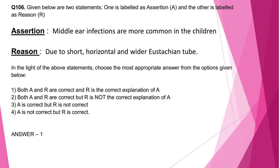Question number 106: Assertion — middle ear infections are more common in children. Reason — due to short, horizontal, and wider Eustachian tube. Both assertion and reason are correct and reason is the correct explanation. In children compared to adults, the Eustachian tube is shorter, more horizontal, and straighter, making them more prone to middle ear infections. In infants, milk can easily enter the middle ear when fed in the horizontal position. The angulation of the Eustachian tube in infants is around 10 degrees — almost horizontal — while in adults it is around 45 degrees.